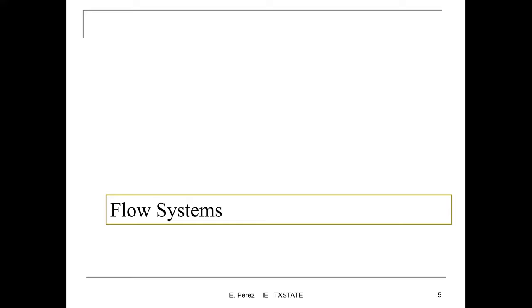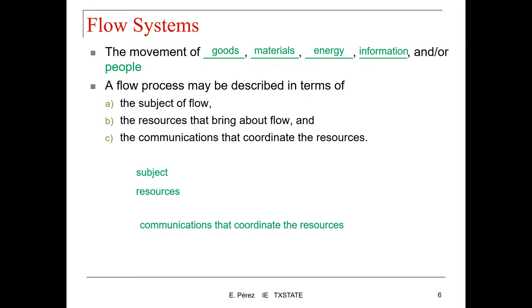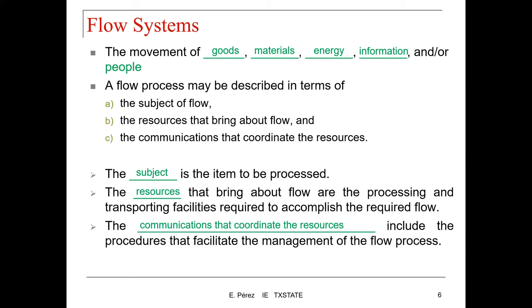Let's start with the discussion of flow systems. Flow is the movement of goods, materials, energy, information, and/or people. The flow process may be described in terms of the subject of flow, the resources that bring about flow, and the communications that coordinate the resources. The subject or entity is the item to be processed. The resources are the processing and transporting facilities required to accomplish the required flow. The communications include procedures that facilitate the management of the flow process.